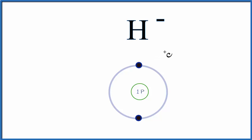To start, let's draw the Lewis structure for hydrogen as it's found on the periodic table. This is a Bohr diagram of hydrogen.